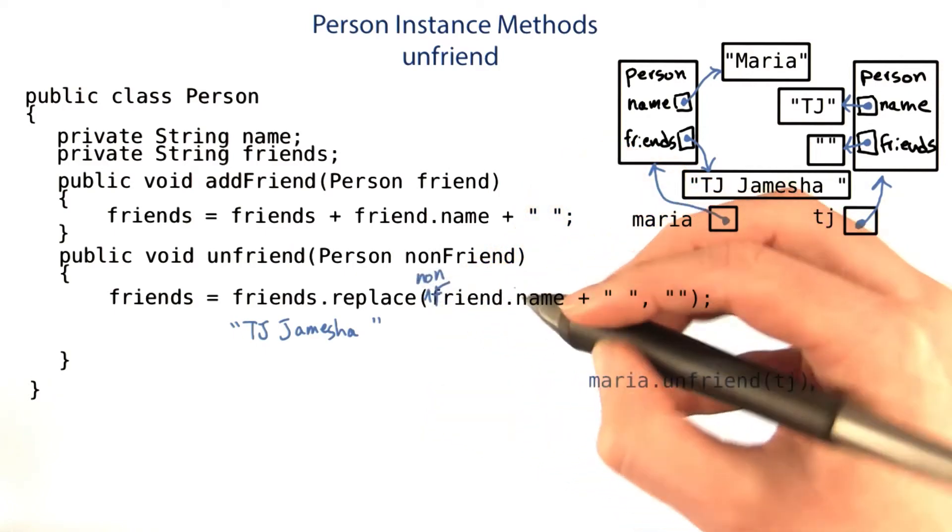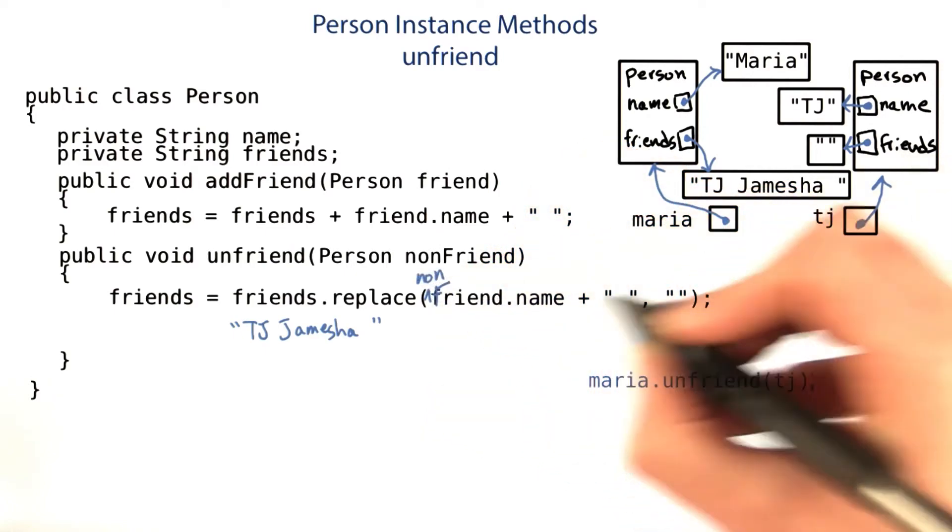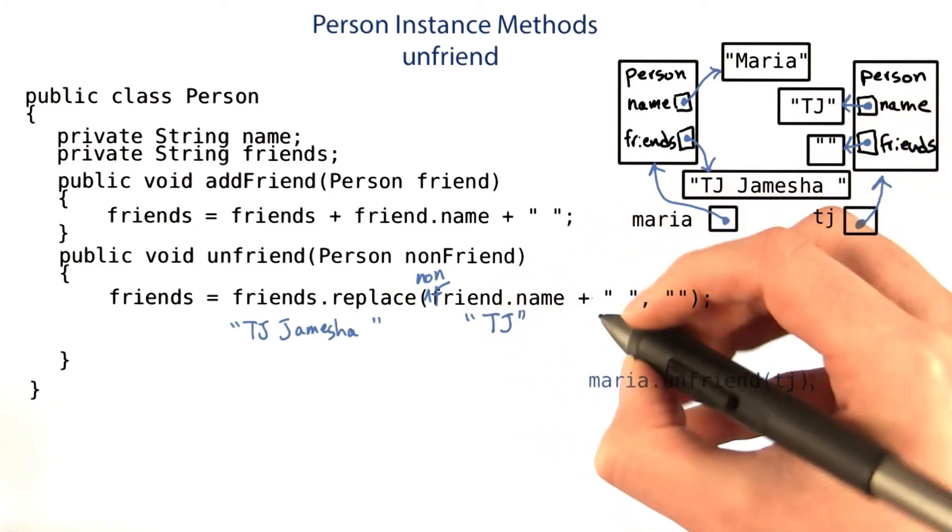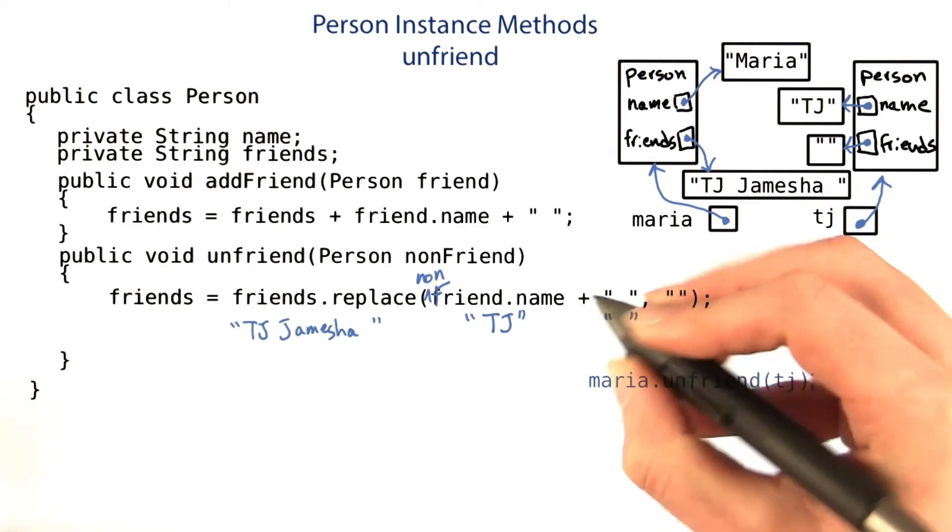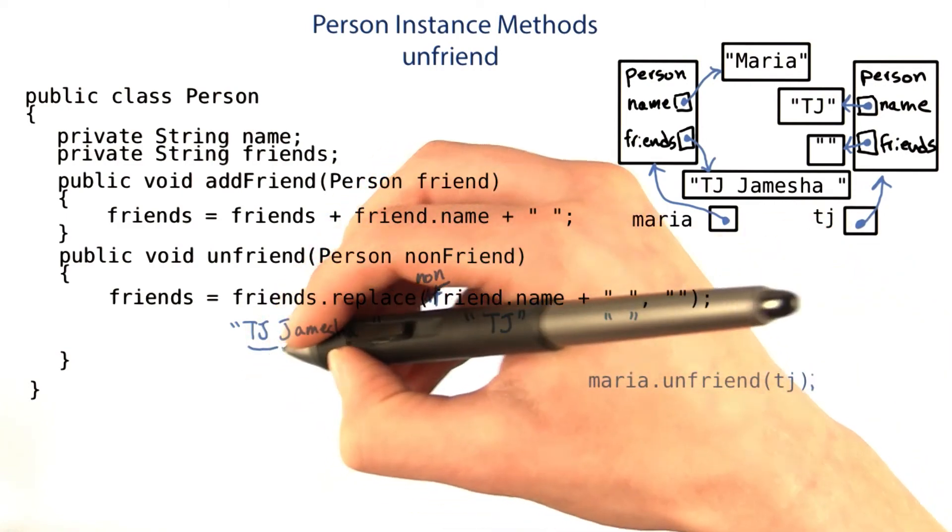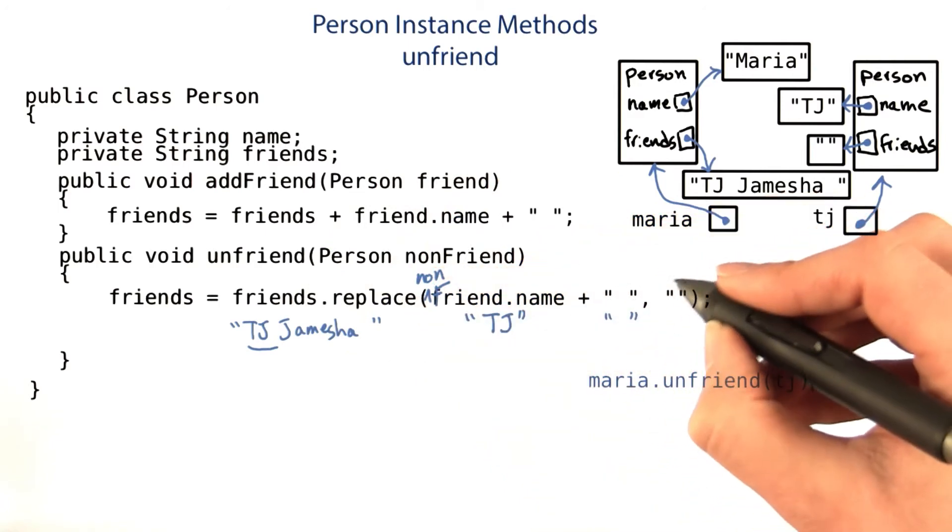So non-friend was TJ.name is the string with TJ, and nothing else. And then we're adding that together with another space. So we look for the TJ space in friends, and we replace it with an empty string.